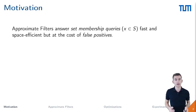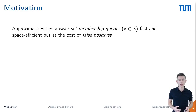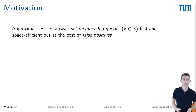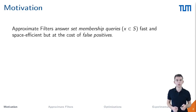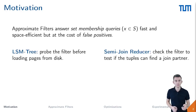Approximate filters answer the question of whether a key is part of a set efficiently. Usually, we would build a hash table over the set or sort it and then probe for the given key. Filters, however, can reduce the query time and the underlying structure's size at the cost of false positives. This means that a key that is not part of the set can incorrectly be reported as a member, but the filter will always report contained items as such, so there are no false negatives.